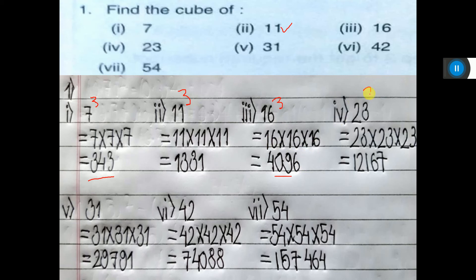23 cube. 31 cube. 42 cube. 54 cube. Then only, you multiply and get result. So, this is very easy sum.